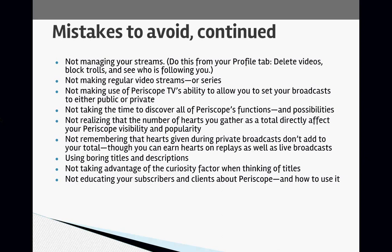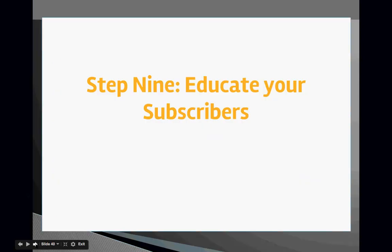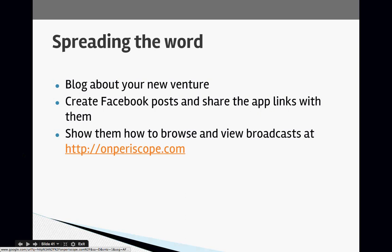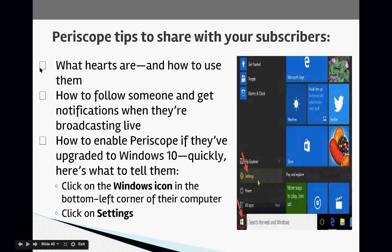Another mistake: using boring titles and descriptions. Make sure they are exciting and descriptive. Not taking advantage of the curiosity factor when thinking of your titles — you definitely want your titles to make people curious about what you're going to be scoping about. And not educating your subscribers and clients about Periscope is why I'm doing this training right now.